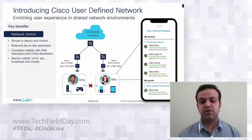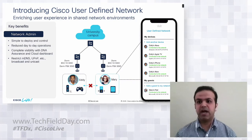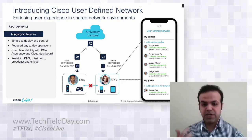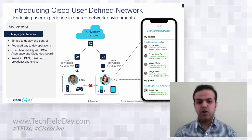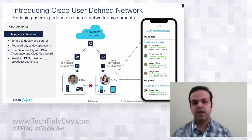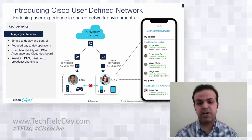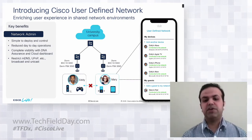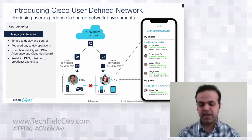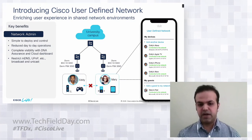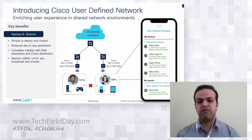The key benefits for the network admin include: it is easy to deploy and reduces day-to-day operations. Previously, the admin had to assign a dedicated VLAN per student to create private network segments. Now operations are much simpler. The admin gets complete visibility through Cisco DNA Center and a cloud dashboard. The admin can also restrict MDNS, UPnP, broadcast packets, and even unicast communication between two user-defined networks if desired.